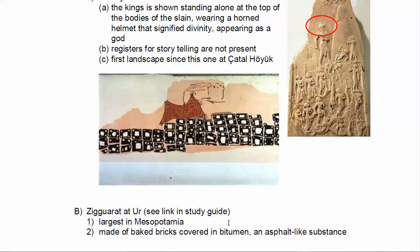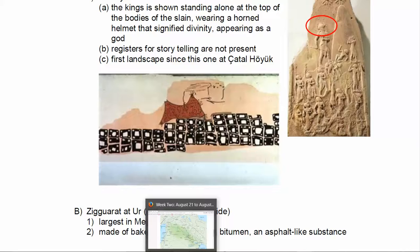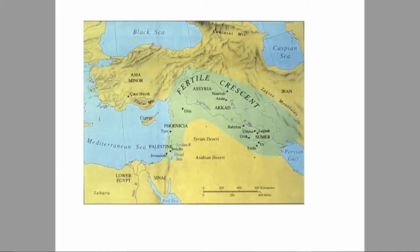Çatalhöyük is a really fascinating dig. Here it is on the map, up in Turkey — they've been excavating there for a couple of decades now. It's a really large site, and there's a lot of information online about the site and their digging. They've built a large protective structure over it so people can visit and explore without damaging anything.